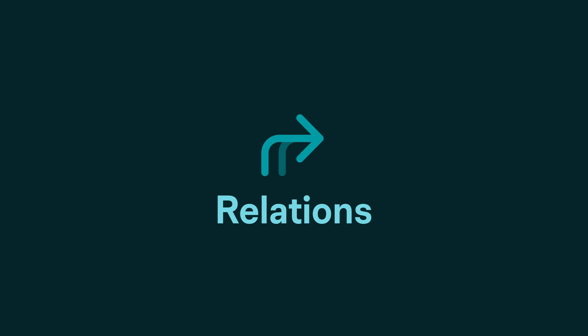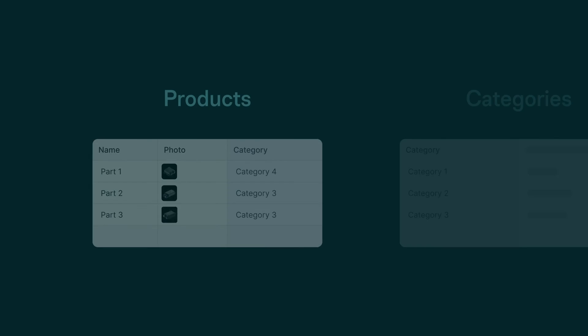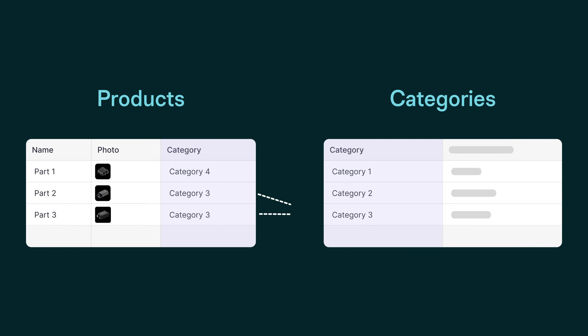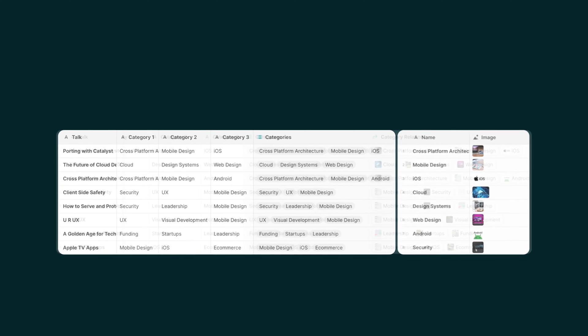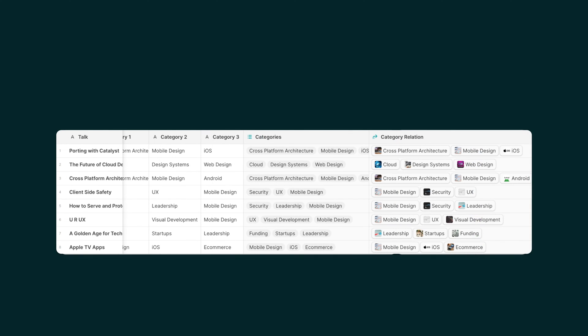Array columns can also be useful in relations. Relations typically use a single source column to match with other items. However, you can choose an array column as a relation target and therefore match based on multiple criteria.